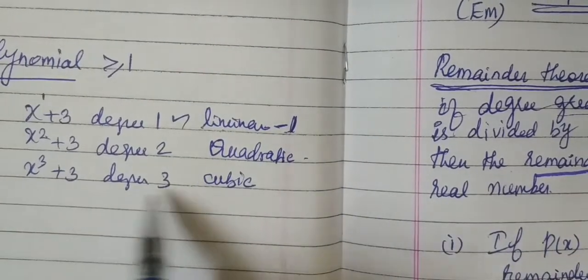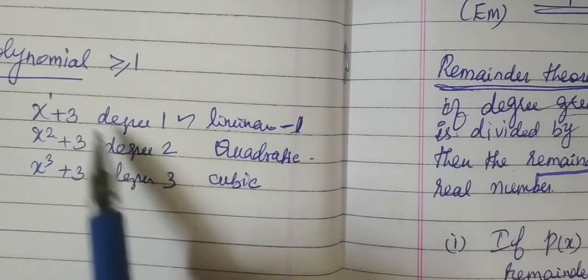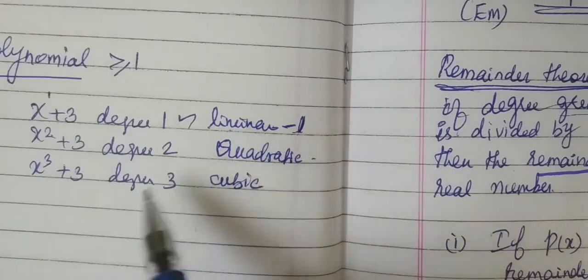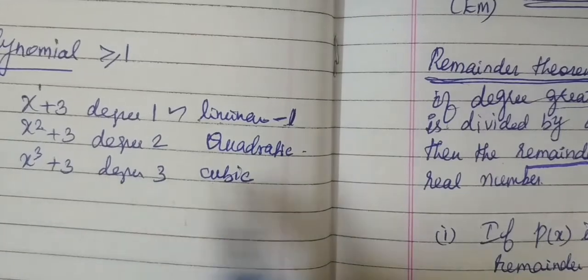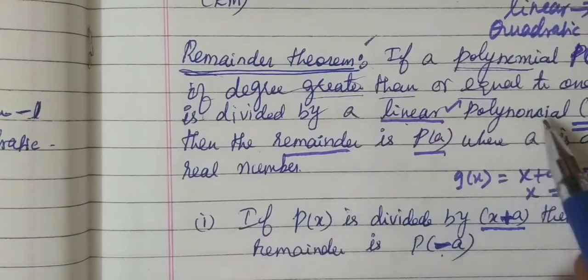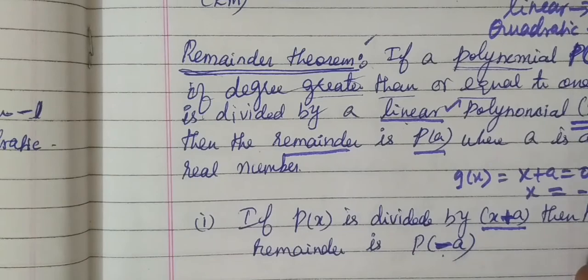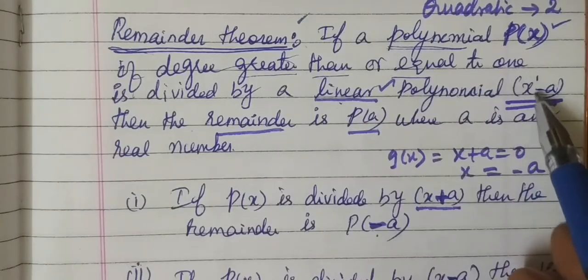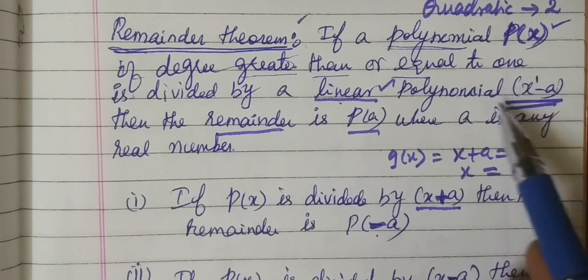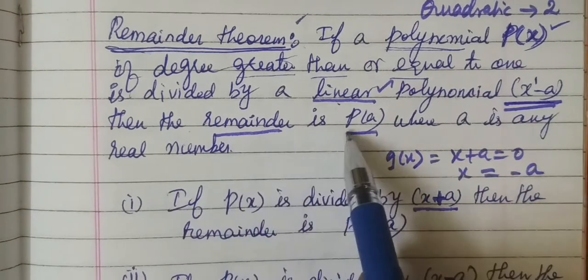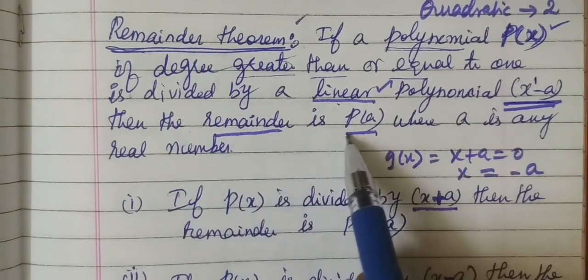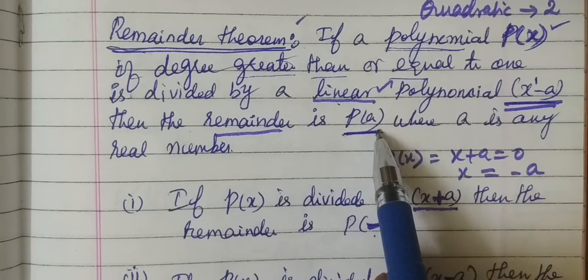We call degree-3 a cubic polynomial. So there are many kinds of polynomials. In this theorem, we are dividing by a linear polynomial - linear means the power is 1. This is a linear polynomial, and we will find the remainder.